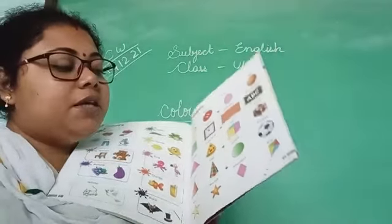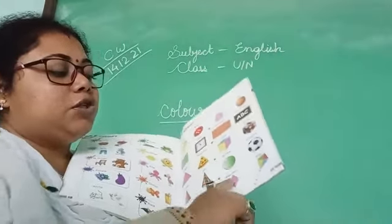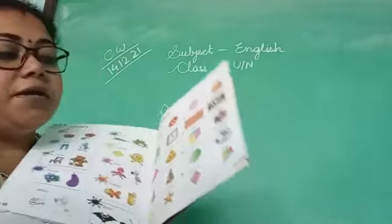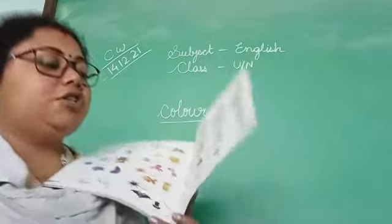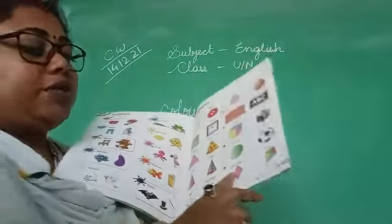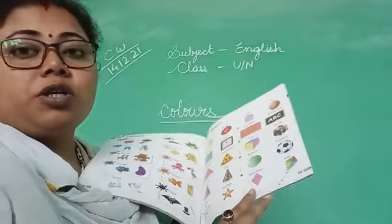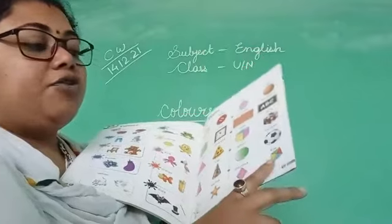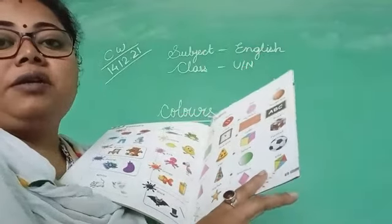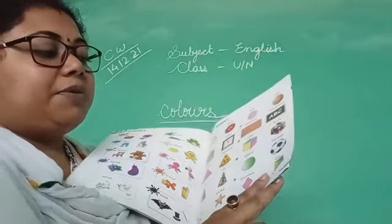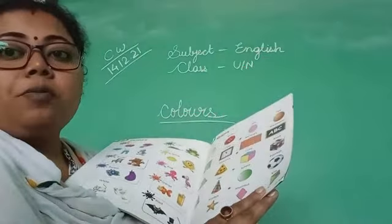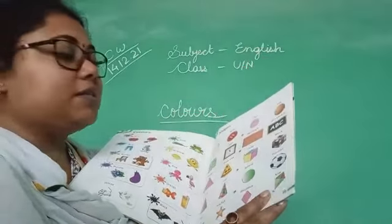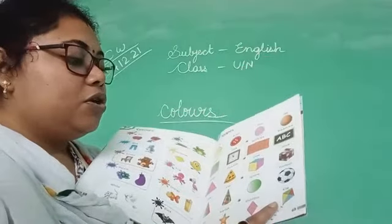Then, this is known as rhombus. What is the shape name? This shape is known as rhombus. Rhombus example is kite.